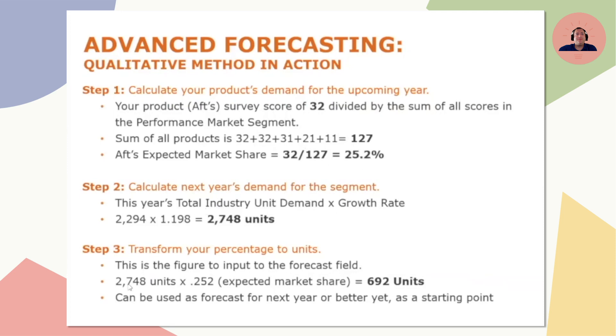I would take my score divided by the total to get my expected market share for this year, then take this year's demand times my expected market share. What I really expect to sell in this example would be 692 units.